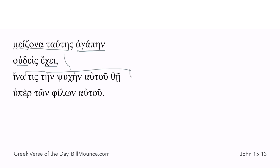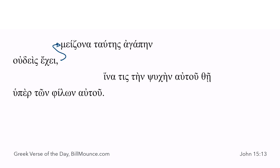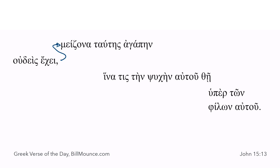How do you represent that in phrasing? It's hard, but let's do it this way — you can kind of assume this kind of action. If it were English word order, it would be: 'oudeis echei agapen' — no one has love greater than — there's your genitive of comparison — than this. Well, what is the 'this'? That someone might lay down his life, and lay it down how? On behalf of his friends.